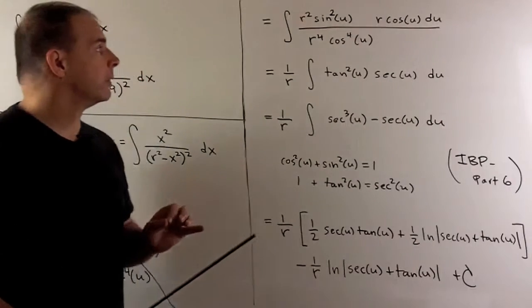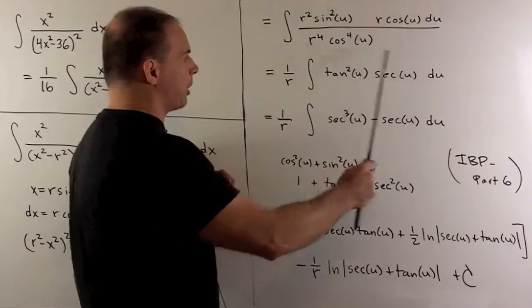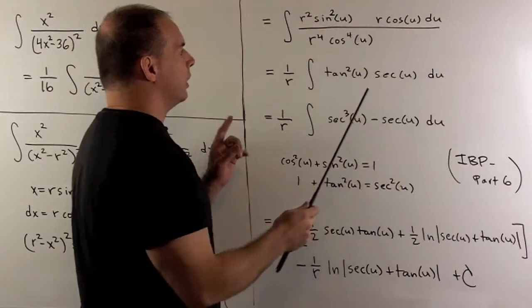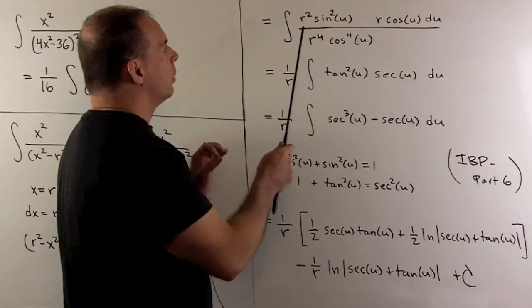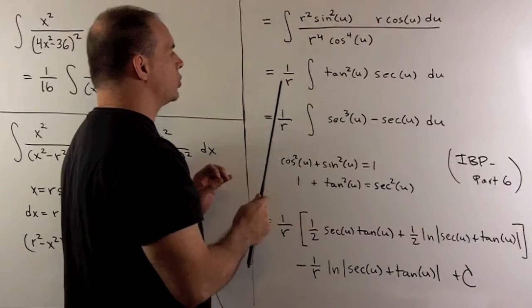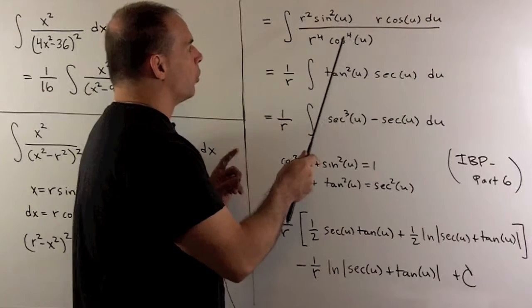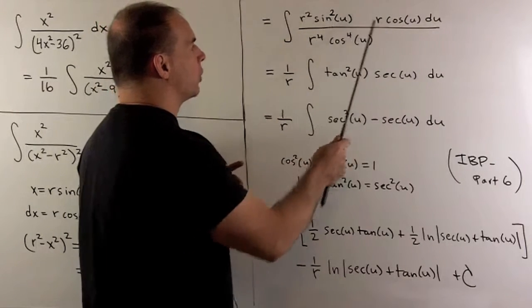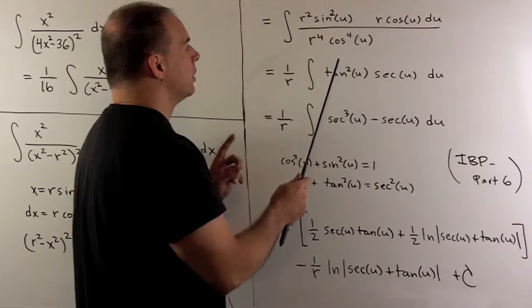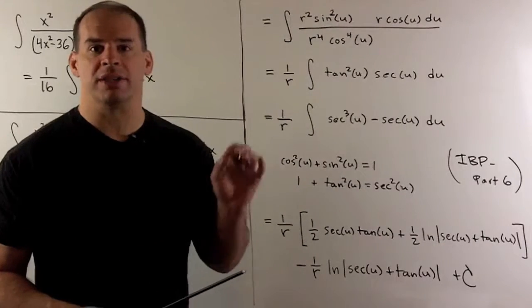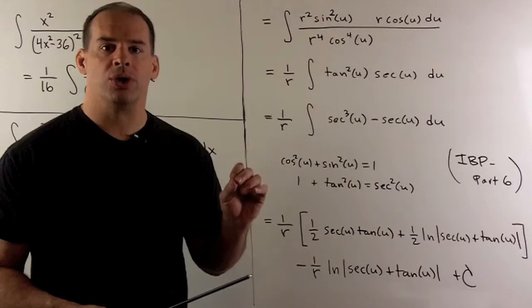We substitute. That gets us to this expression here. So, we note what's going to happen. When we collect our r's, we're going to have just one left, 1 over r. We're going to have sine squared over cosine cubed. So, sine squared over cosine squared is tangent squared. 1 over cosine is secant.